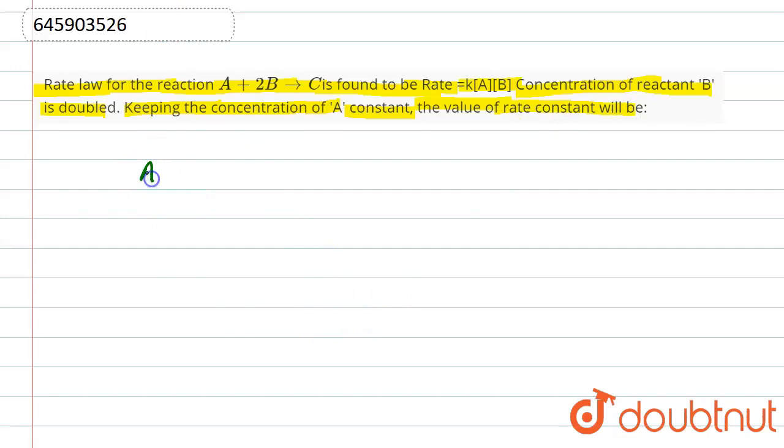We have given this reaction that A + 2B is converting to C and we are along with that we have given that rate law expression. So rate law expression is k[A]^1[B]^1. Remember that in rate law expression it is experimental data, so do not go for this stoichiometric coefficient.